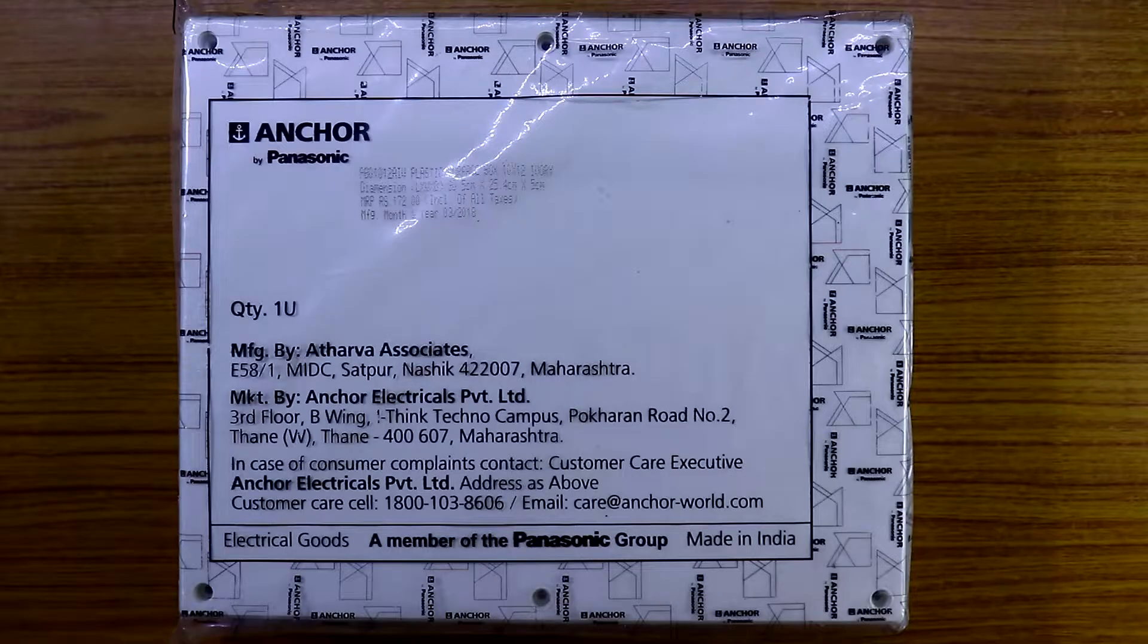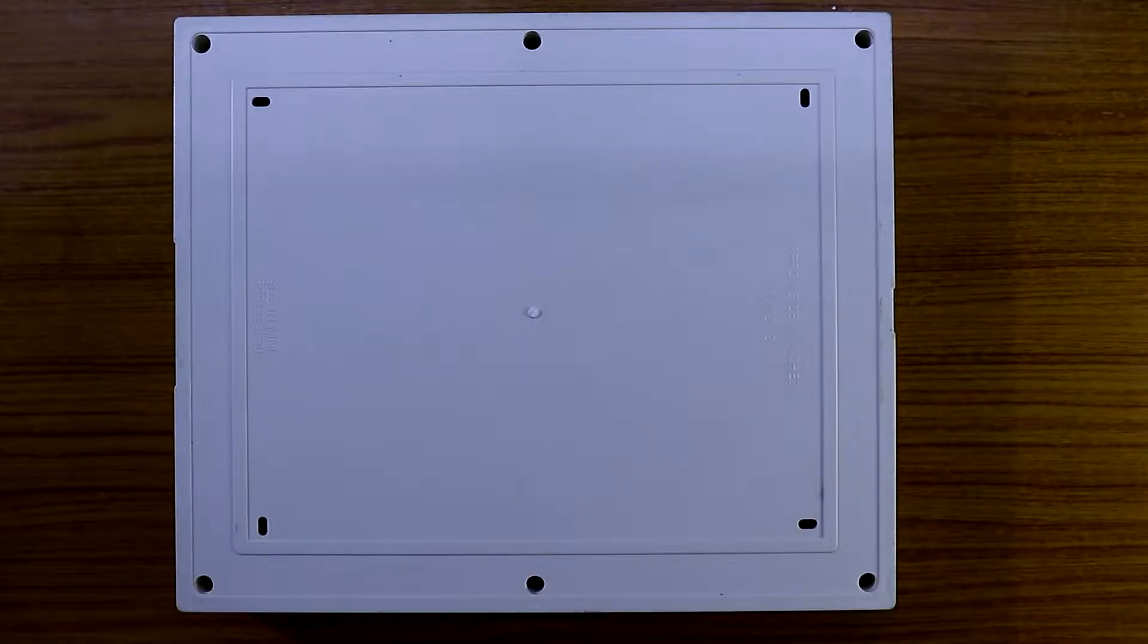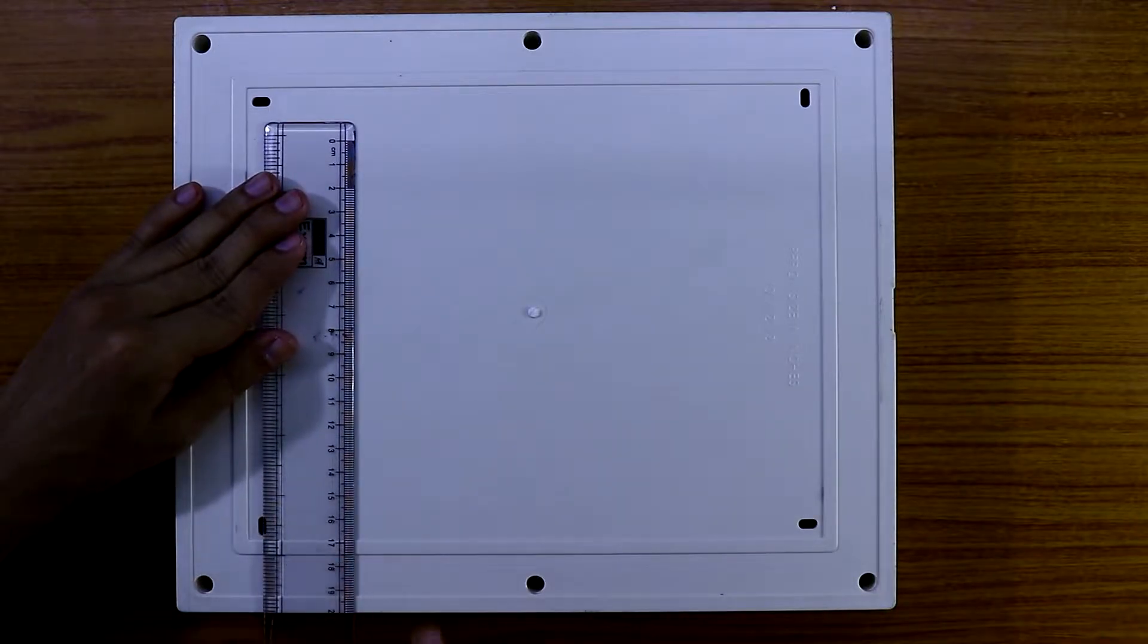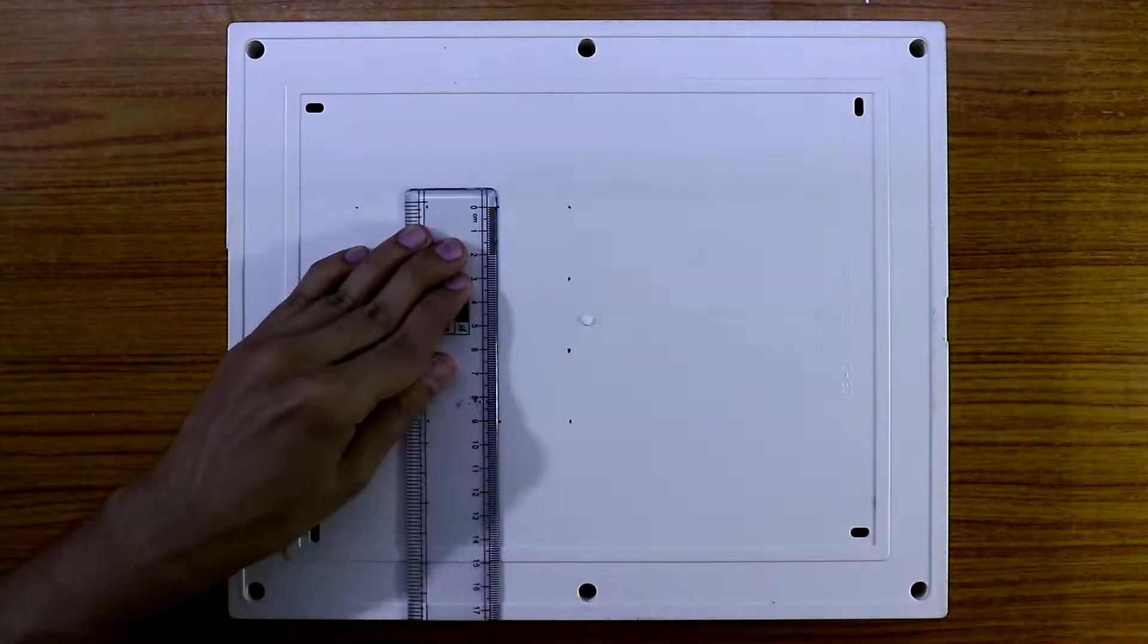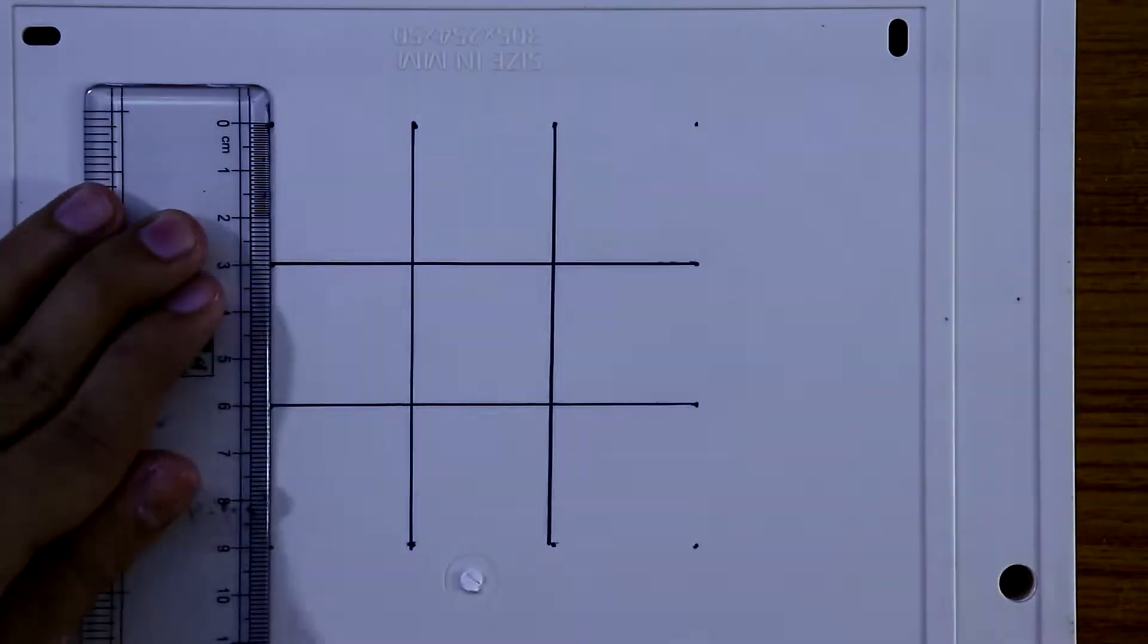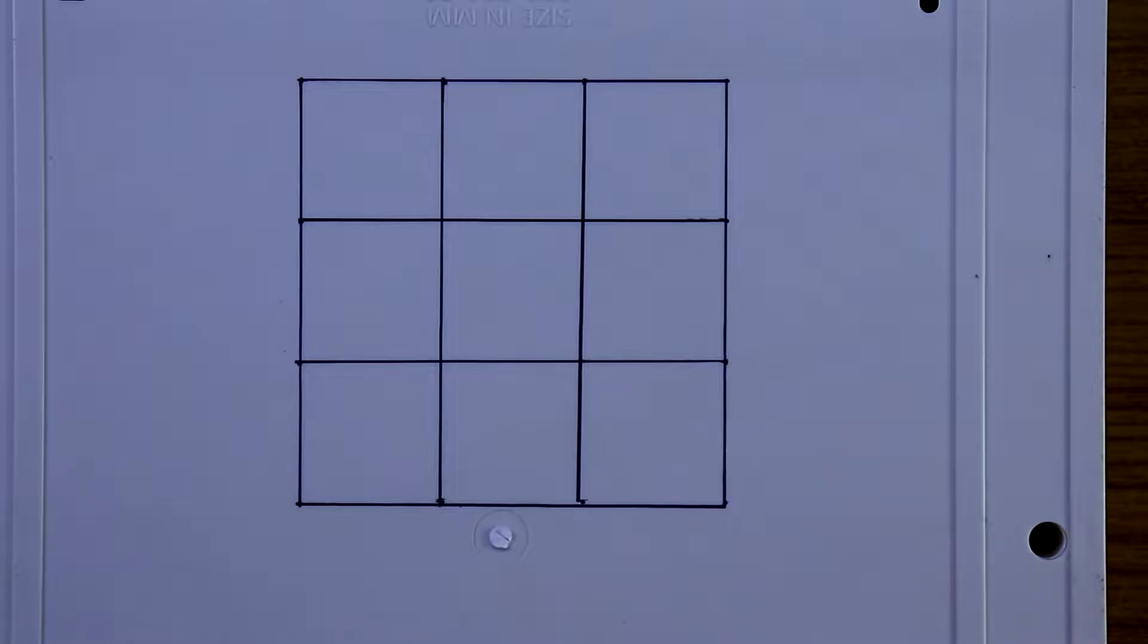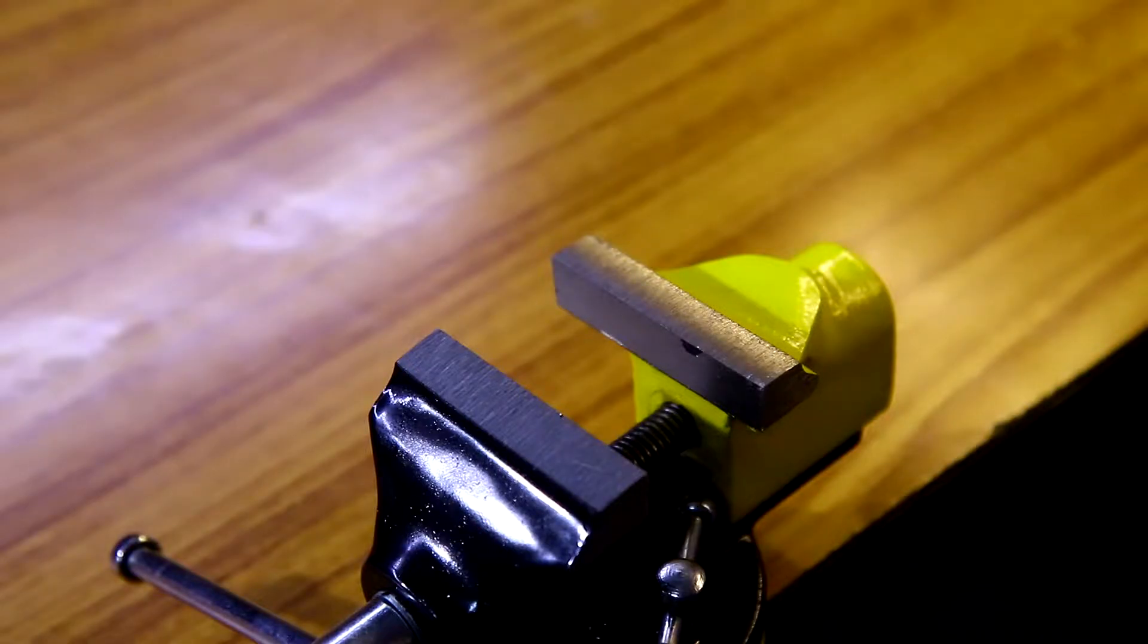To make this you need this kind of board. Now remove this cover. After removing the cover we'll put four dots. The gap between two dots is three centimeter. Now we have to make holes in this. We have to make five millimeter holes. Now just follow these steps.